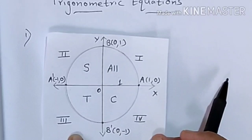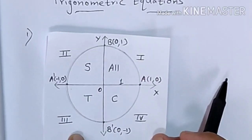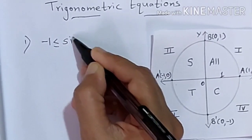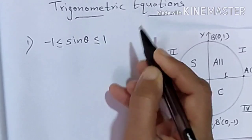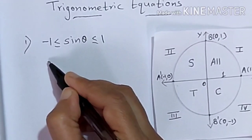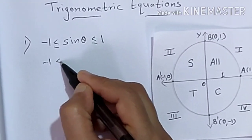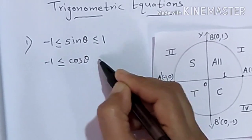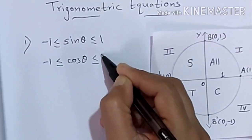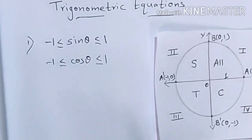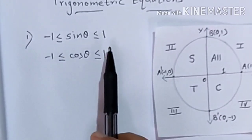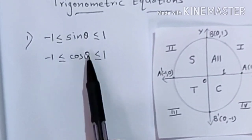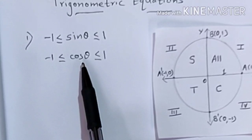We also know that sin theta and cos theta lie between -1 and 1. So the maximum value for sin theta is +1 and the minimum is -1; the same is true for cos.